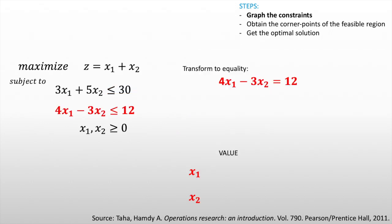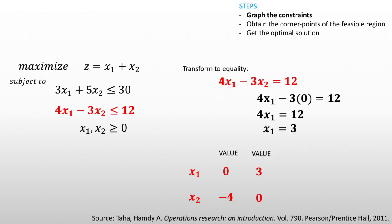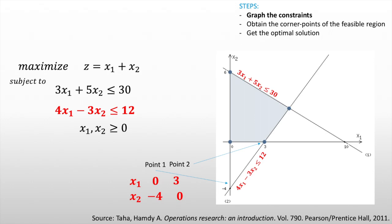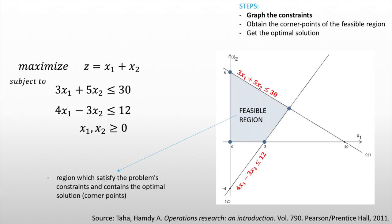Then let's go with our second constraint. We transform it to an equality: 4x1 minus 3x2 equals 12, and apply the intercept method. Let x1 equal 0: we get x2 equal to negative 4. Let x2 equal 0: we get x1 equal to 3. With these two points, we graph the second constraint. Since it is less than or equal, only the area to the left of the graphed line is feasible. The shaded area — called the feasible region — is the region that satisfies all the problem's constraints and contains the optimal solution.